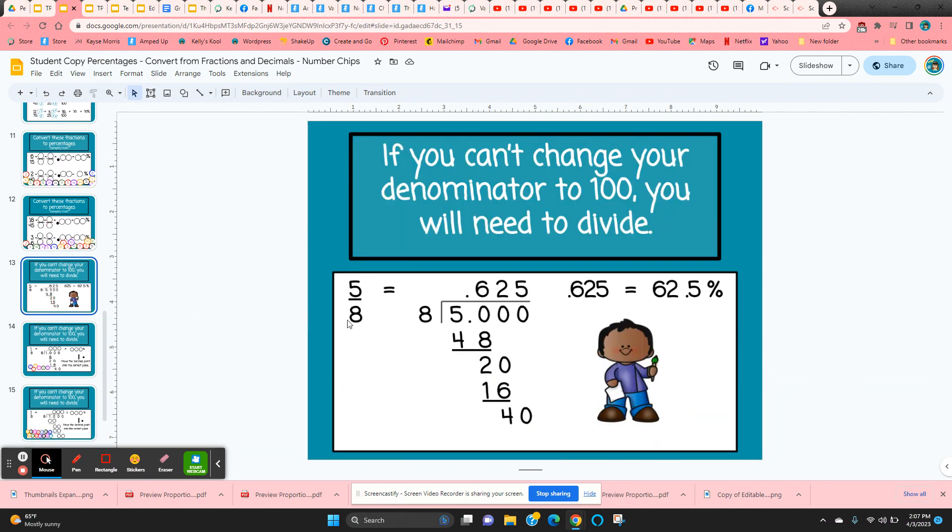And then there are times when we can't convert to an equivalent fraction with 100 in the denominator. So in this case, we just need to use long division. So 5 divided by 8. And here's an example of how that works. We get a decimal answer. We move that decimal point two places to the right. And that gives us 62 and a half percent.